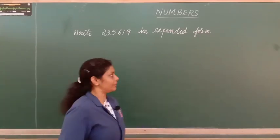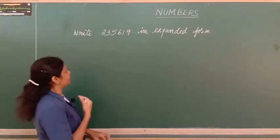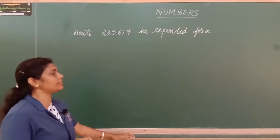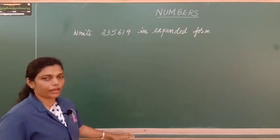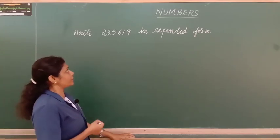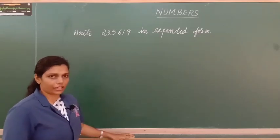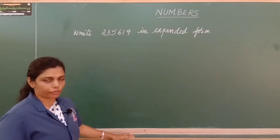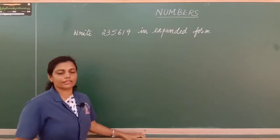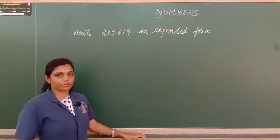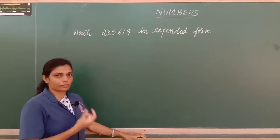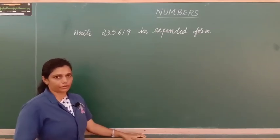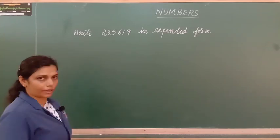The next problem is: write 2,35,619 in expanded form. In your lower classes, you have done this type of problem where we write the number in expanded form by using its place value.